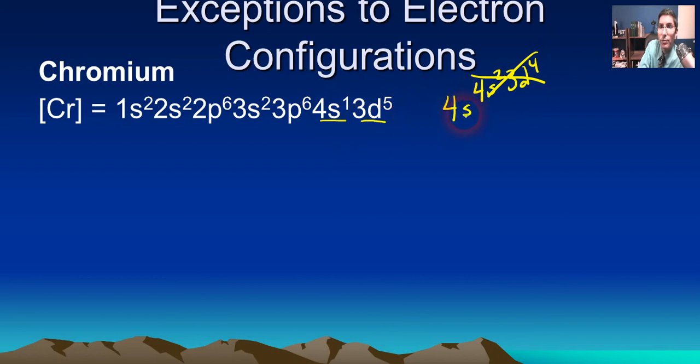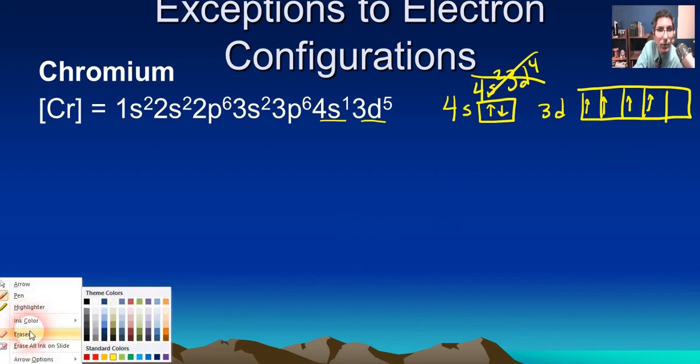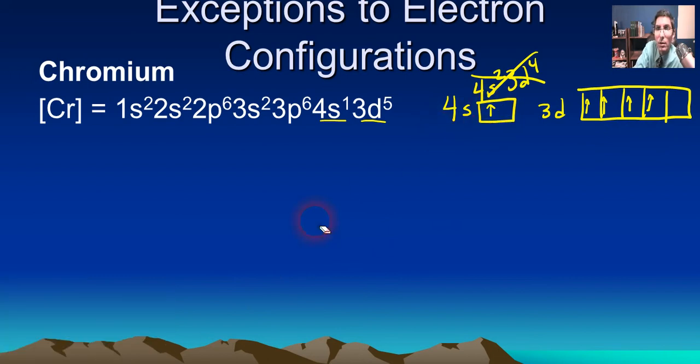And so what we think happens is, here's the 4s, and we think it would be 4s2 and then 3d4. But then the 3d sub-level is about one electron away from being half-filled. We think that half-filled sub-levels are kind of stable. And so what happens, at least we believe this is what happens, is that this electron right here actually gets promoted to 3d. And so that's why it's 4s1 3d5. So that's chromium.